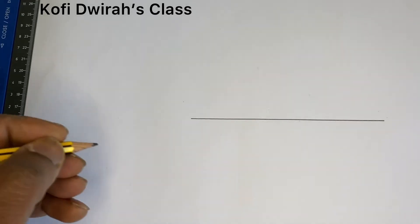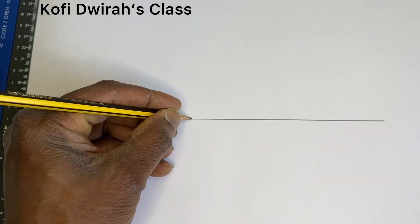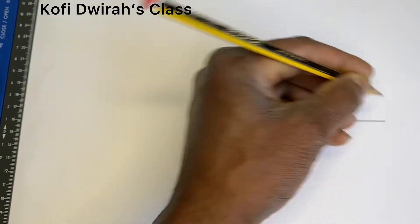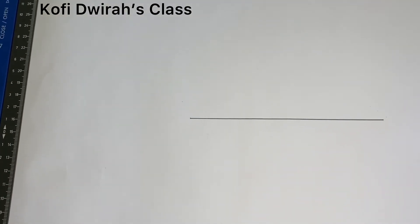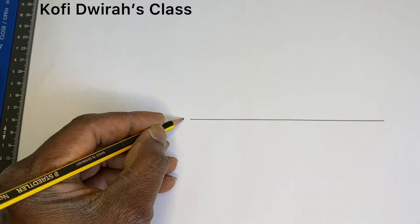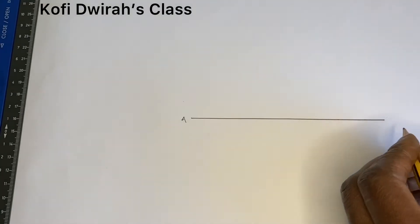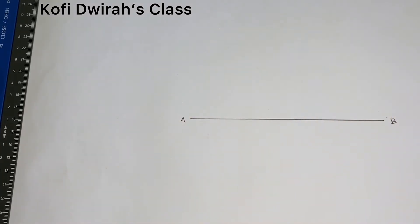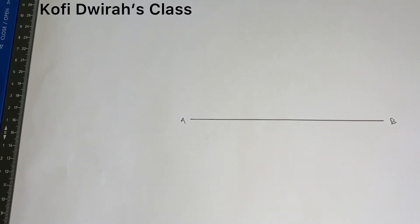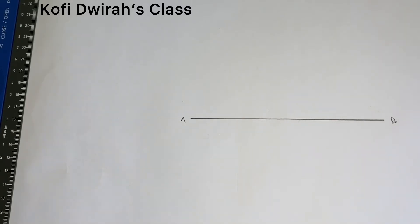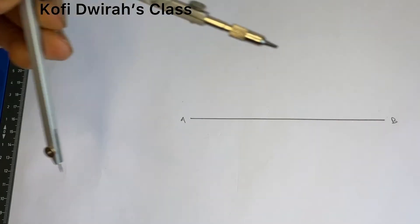We consider this line to be the diameter of the hexagon. We have this point to be A, and we have here to be B. This is the diameter of the hexagon. So with this method, after drawing the diameter, you bisect line AB.